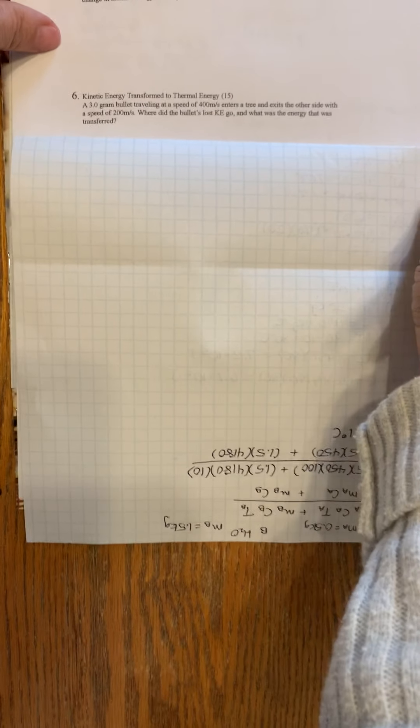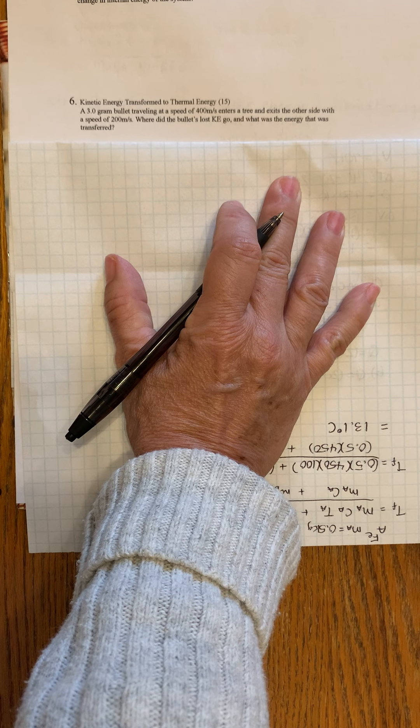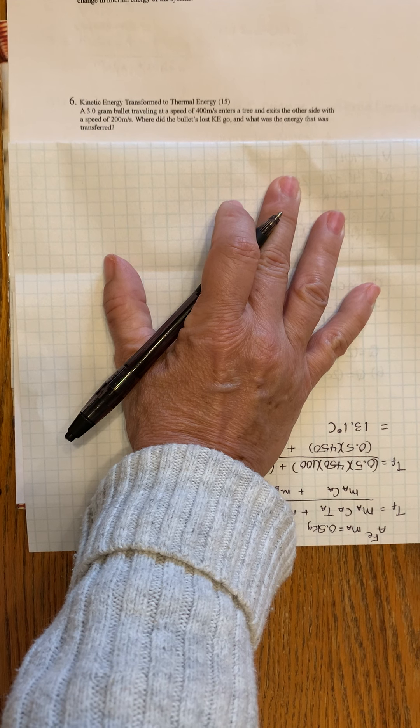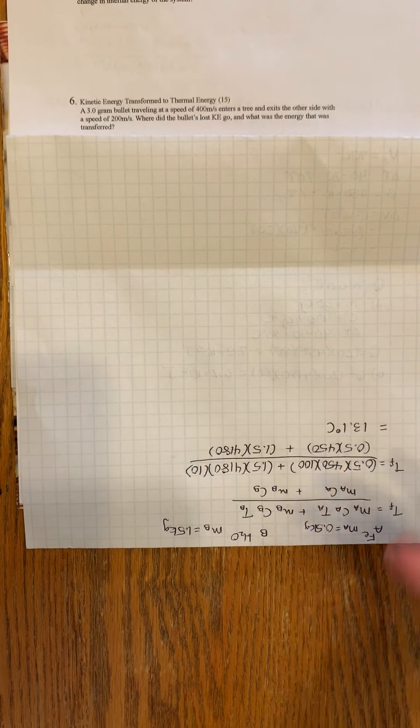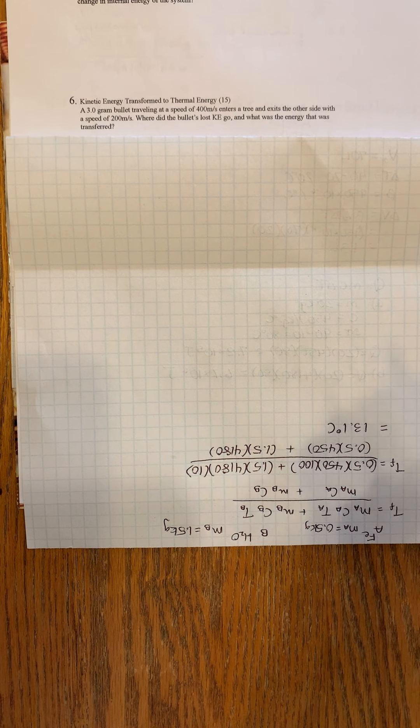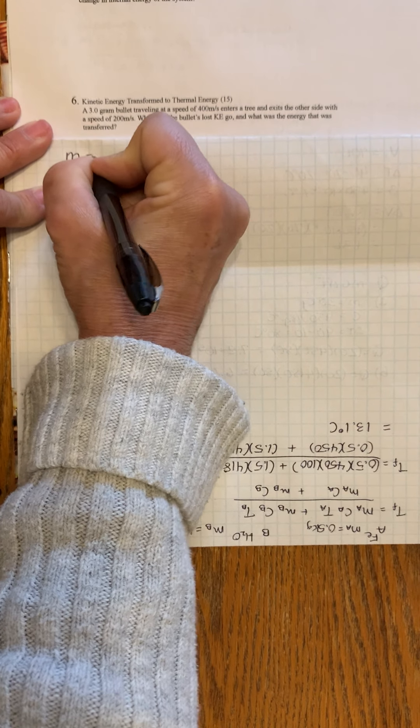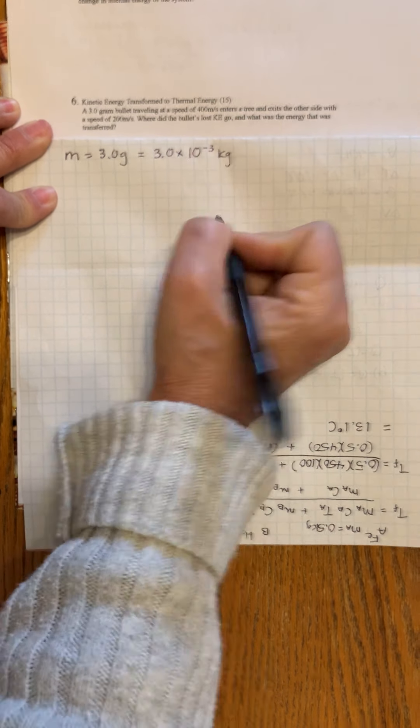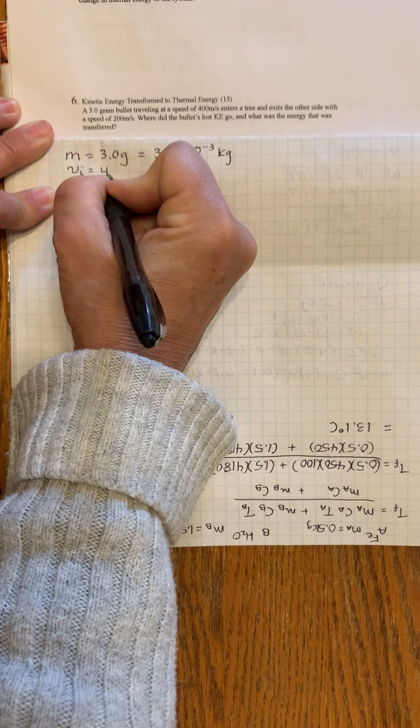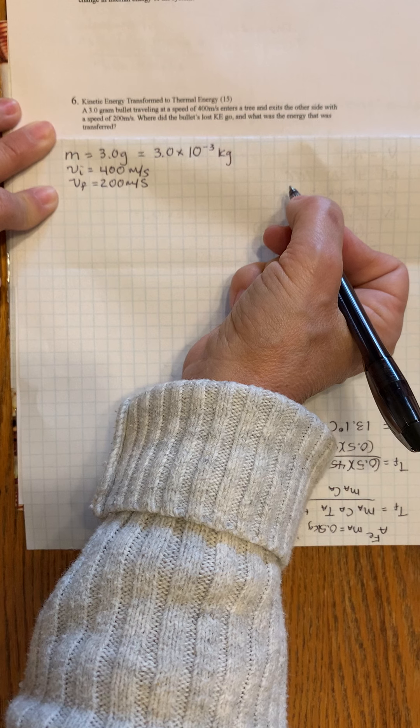Number six: kinetic energy transformed to thermal energy. A 3 gram bullet, we have to change it to kilograms, traveling at a speed of 400 meters per second enters a tree and exits the other side with a speed of 200 meters per second. Where did the bullet's lost kinetic energy go, and what was the energy transferred? We know right off the bat the kinetic energy got transformed into heat energy. The mass is 3 grams, which is 3 times 10⁻³ kilograms. Initial speed is 400 meters per second, final speed is 200 meters per second.